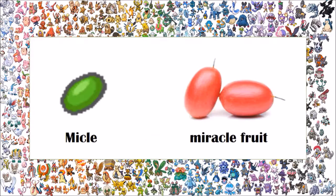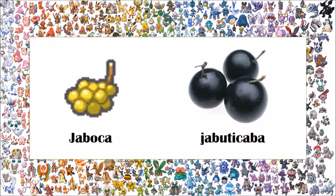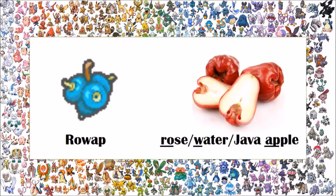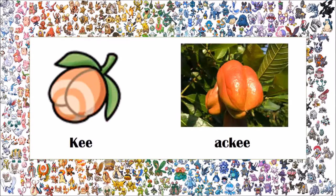The Micle berry is based on the miracle fruit. The Custap berry, like we discussed earlier, is based on a similar fruit as the Yache berry. The Yache was based on the cherimoya, also known as custard apple. However, the Custap, while directly inspired by the word 'custard apple', is also known as a sugar apple in some places. The Jaboca berry is based on the jabuticaba. The Rowap berry is also inspired by the same fruit as the Chople berry. Chople was inspired by chimfu and wax apple, but it's also known as rose apple, water apple, and java apple — so combining rose, water, and apple gives you Rowap. The Roseli berry is based on the roselle. The Kee berry is based on the akki. The Maranga berry is based on the meringue.